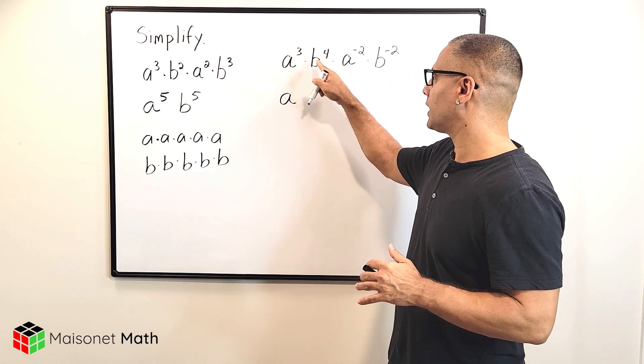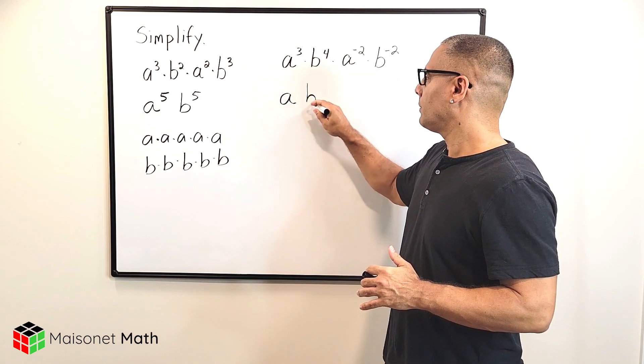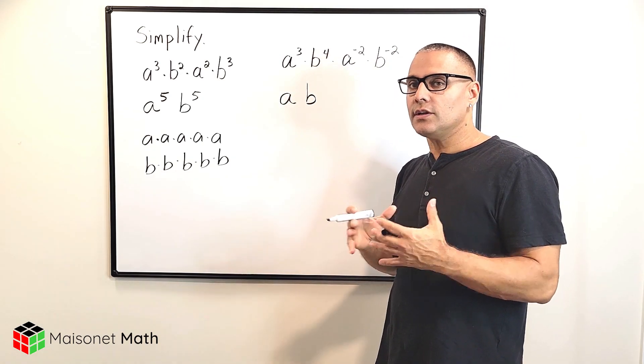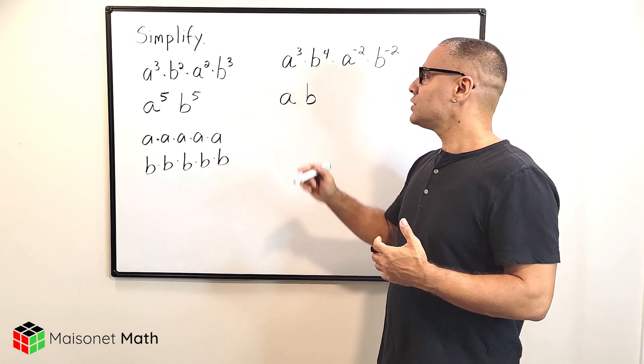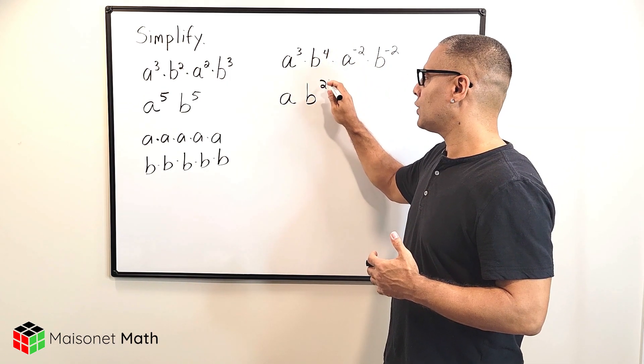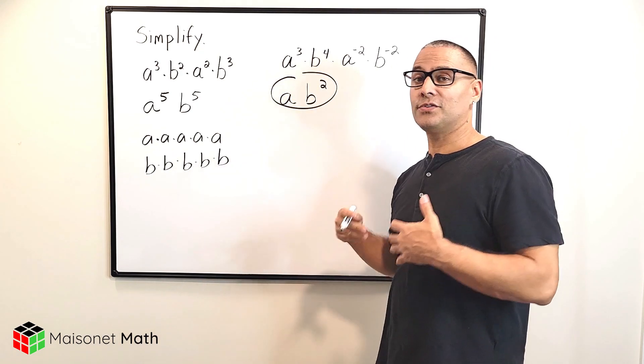Alright, let's go ahead and multiply the b variables together. So we have b to the fourth times b to the negative second. And we still add those exponents together. So when we combine four and negative two, that is positive two. So this expression is in simplest form.